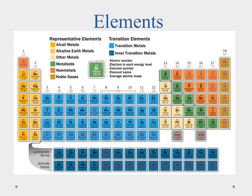To begin, we should talk about elements. An element is a pure substance made up of only one kind of atom, so all the atoms are going to be the same. When we talk about the element of hydrogen, all hydrogen atoms are the same — they all have the same basic properties, and that basic property is the number of protons.